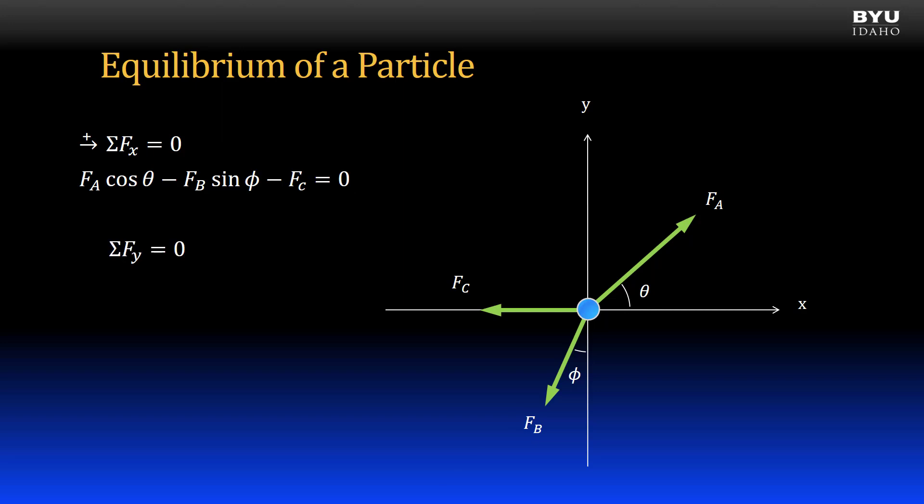Let's now look at the y direction. The typical convention is to say that any force component acting upward is positive, and any force component acting downward is negative. I will use this notation to show that. Here is the equilibrium equation for the y direction. The first term is for the y component of force FA. The second term is for the y component of FB. Again, note the negative sign as a result of our convention. There is no term in the equation for force FC because it has no vertical force component. Both of these components will sum to zero when the particle is in static equilibrium.